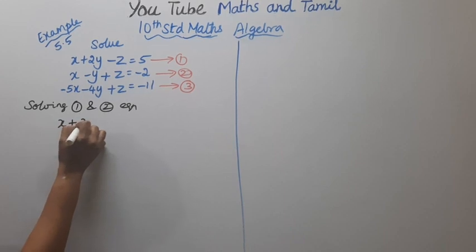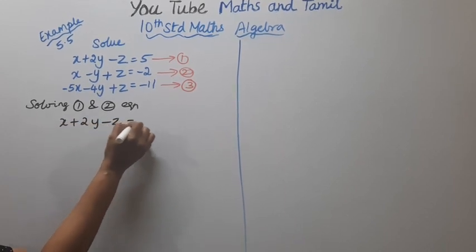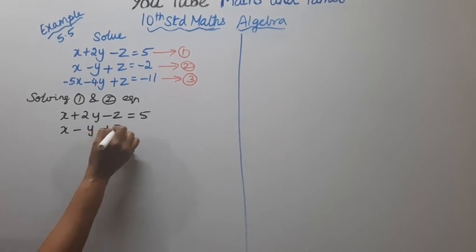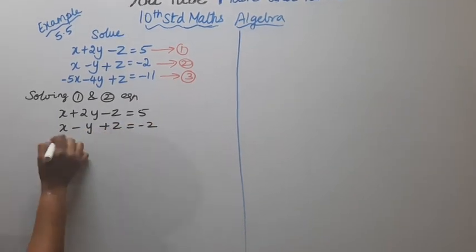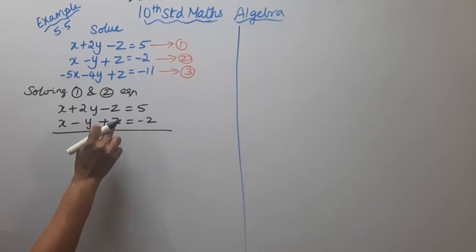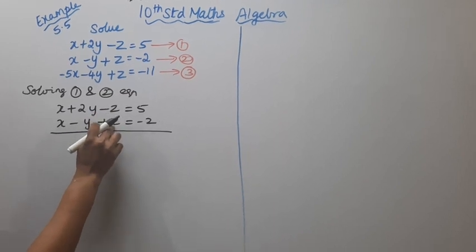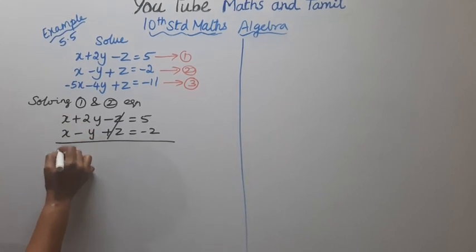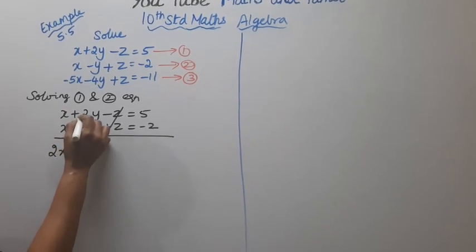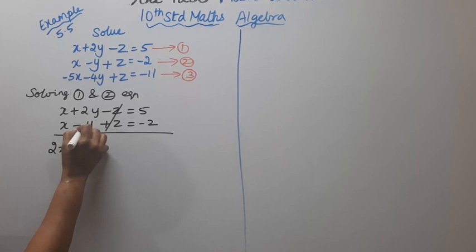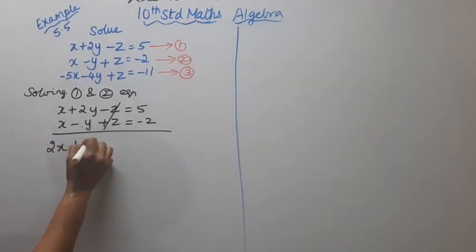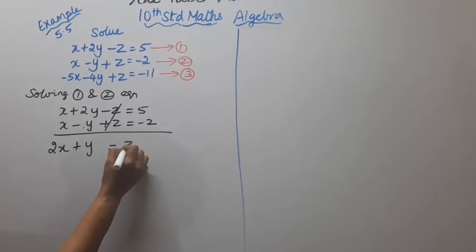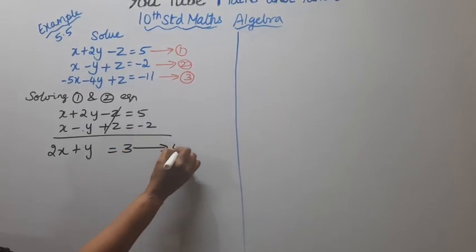x plus 2y minus z equal to 5, x minus y plus z equal to minus 2. The z terms have opposite signs, so they cancel. Adding the equations: 1x plus 1x gives 2x, and 2y minus y gives plus 1y, equal to 5 minus 2, which is 3. This is the fourth equation.